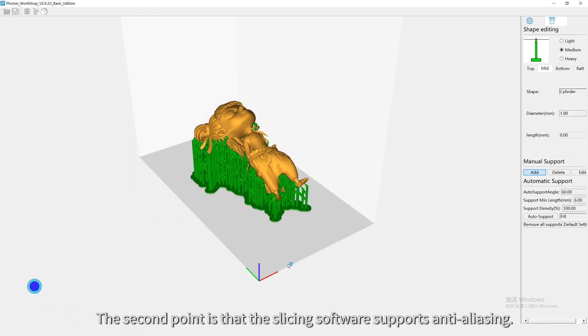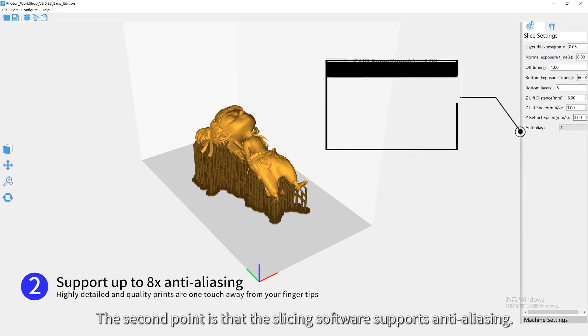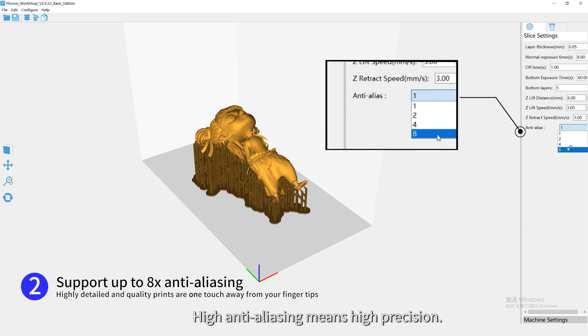The second point is that the slicing software supports anti-aliasing. High anti-aliasing means high precision.